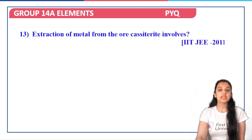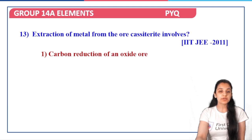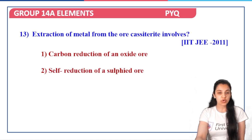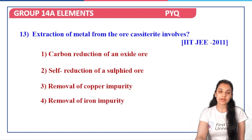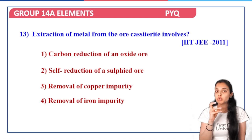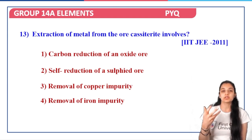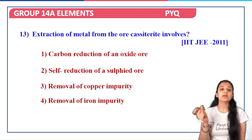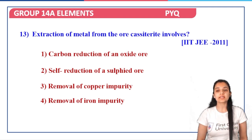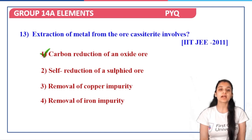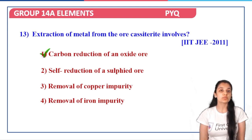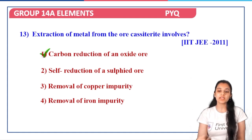Next: extraction of metal from the ore cassiterite involves carbon reduction of an oxide ore, self-reduction of a sulfide ore, removal of copper impurity, or removal of iron impurity. We haven't covered this in this chapter, but in the metallurgy chapter we've discussed it. The correct answers are option one — carbon reduction of an oxide ore — and also the removal of iron impurity. Both options are correct.